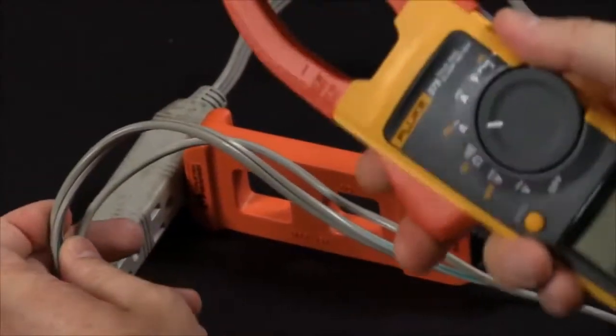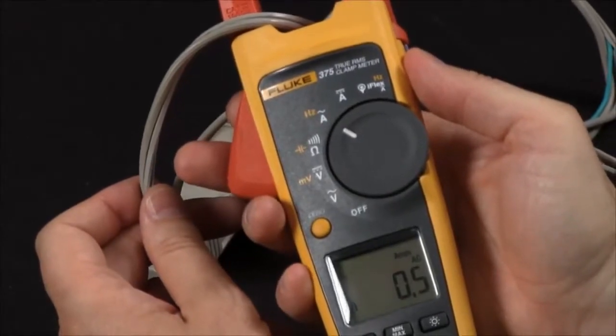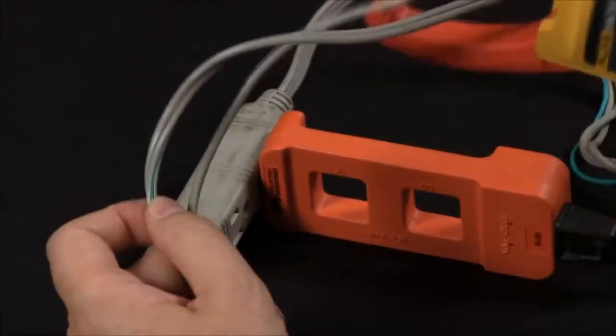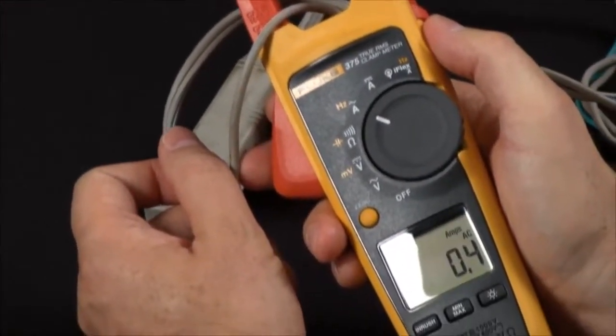However, if I split the cords, it doesn't matter which side I measure. I'm now measuring about half an amp, or if I measure on the other conductor, we'll have the same result, measuring about a half an amp.